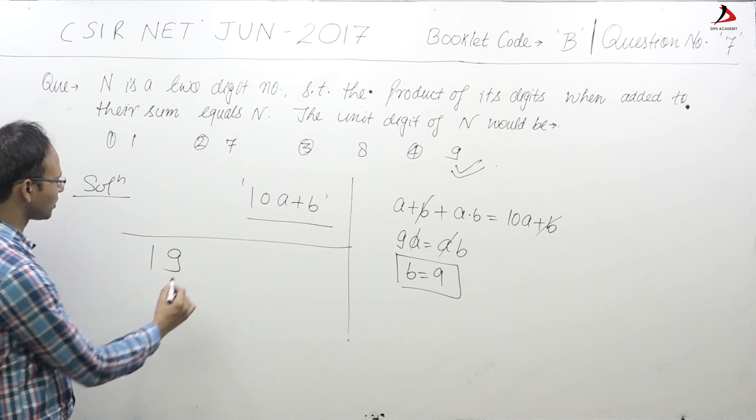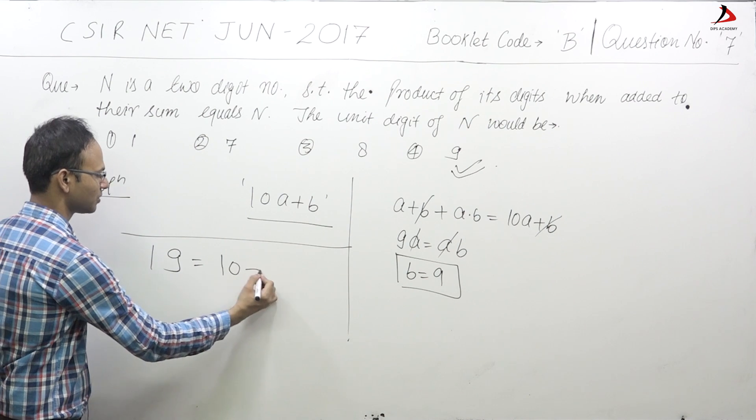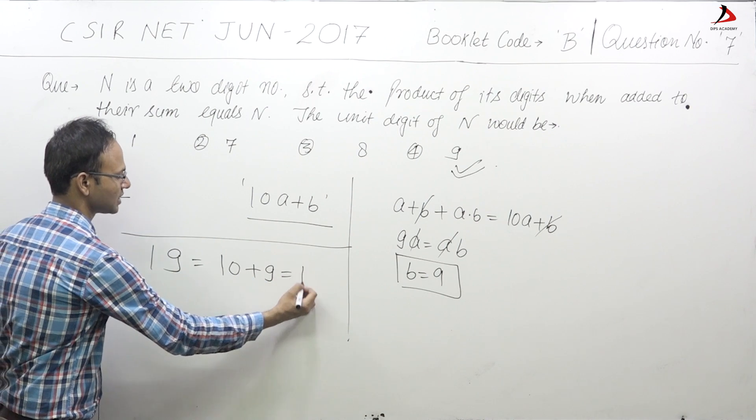Sum of the digits is what? Sum of the digits is 10. Product of the digits is what? Product is 9 and the sum is 19.